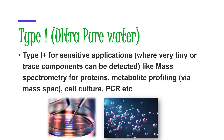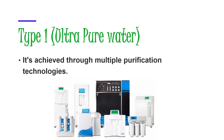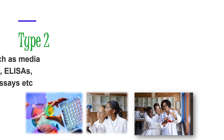Type 1 water is great for applications where even the tiniest trace amounts can be detected. If you're using techniques like mass spectrometry for protein analysis or metabolite profiling, or if you're doing cell culture or molecular biology work like PCR, then you're going to need the highest quality water — ultra pure water. This type of water is obtained through multiple purification technologies.